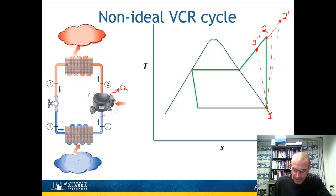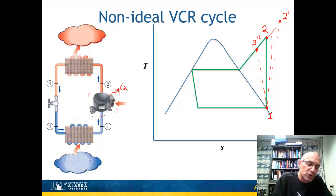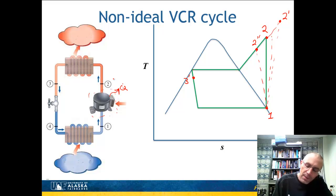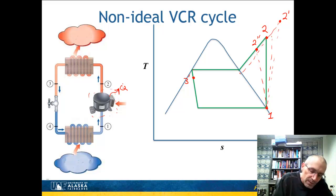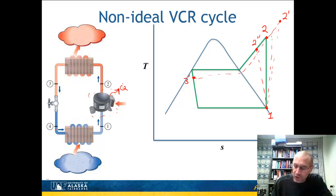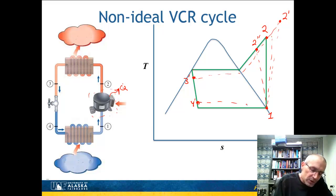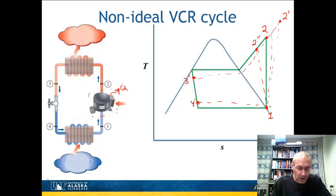We can also look at pressure drops. For example, a pressure drop between points 2 and 3 in the condenser would shift point 3 to a lower isobar — call it 3 prime — as the diagram comes down to that pressure. Similarly, a pressure drop through the freezer box would shift point 4 to a 4 prime. That is what the non-ideal cycle looks like on the TS diagram.